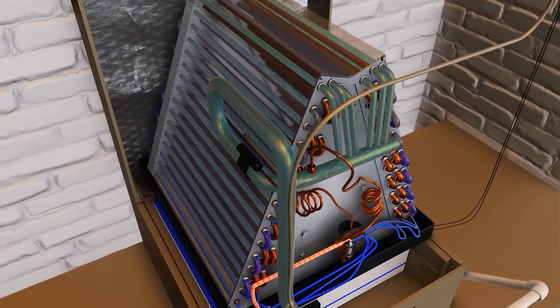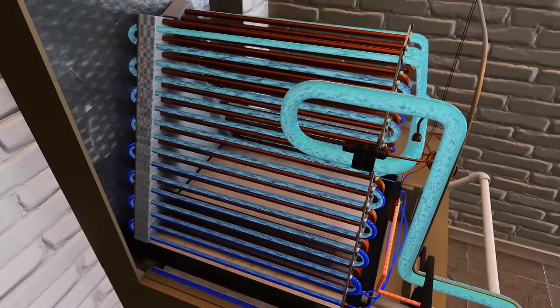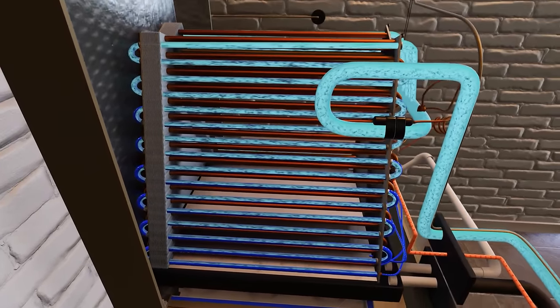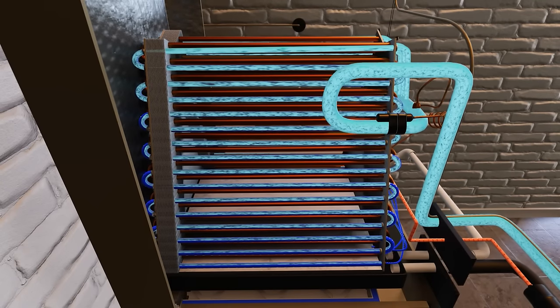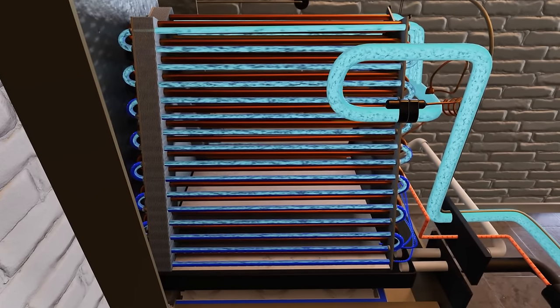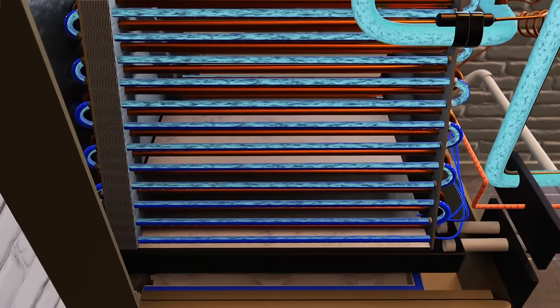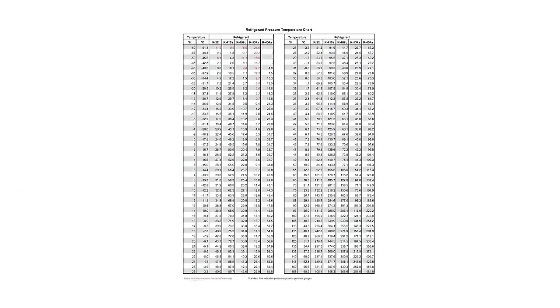When we think about an evaporator coil, there are two things we really want to know. One is: what is the temperature of the refrigerant boiling in the evaporator coil? We call that evaporation temperature or evaporating temperature. And how do we know what that is? You take that suction pressure, you look at the scale for the refrigerant you're working on, and it gives you the temperature — that's suction saturation.